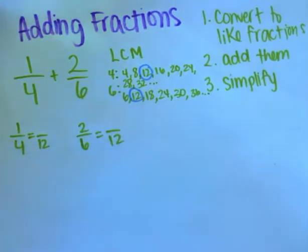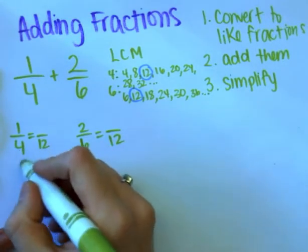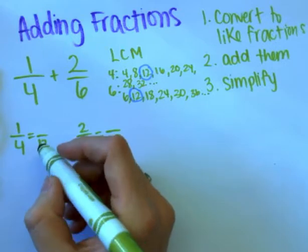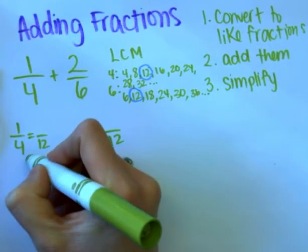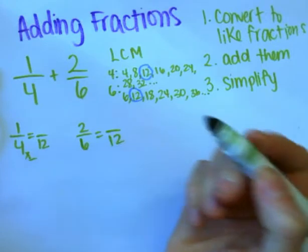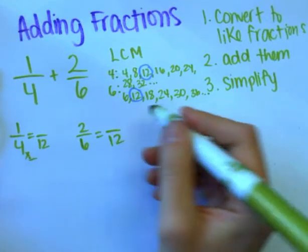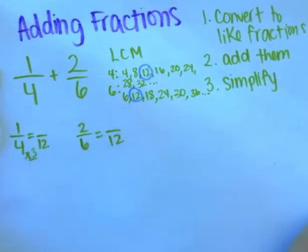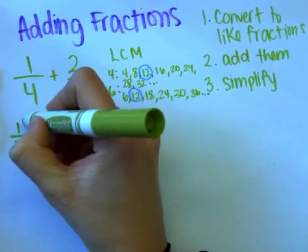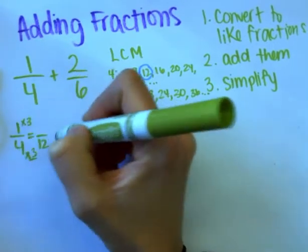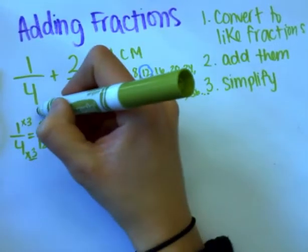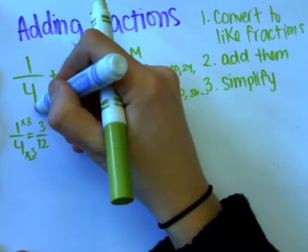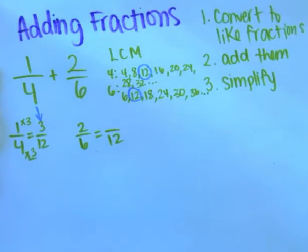To get fourths into twelfths, I'm increasing the number of pieces in the denominator. I'm thinking: four times what equals 12? Four times three is 12. If I do that to the bottom of my fraction, I need to do it to the top. So one times three gives me three. One-fourth converted to three-twelfths.